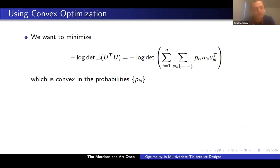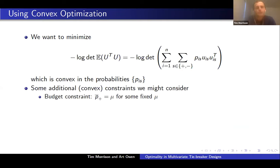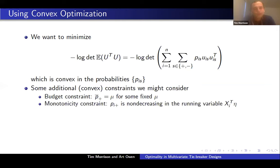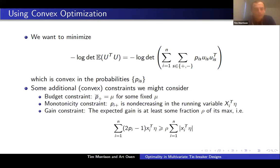More importantly, we can now add constraints that align with the ones seen earlier. Some additional convex constraints to consider: first, a budget constraint — say an airline has a fixed number of upgrades to give out, or a university has a fixed number of scholarships. Second, a monotonicity constraint, which could arise in ethical or economic situations — perhaps your scholarship probability needs to be monotone in GPA or income or whatever metric is reasonable. Third, a gain constraint: the expected gain is at least some fraction rho of its maximum possible value, where the maximum is the expected gain for an RDD. A company might be willing to give up 20% of its maximum gain in order to randomize a bit more.